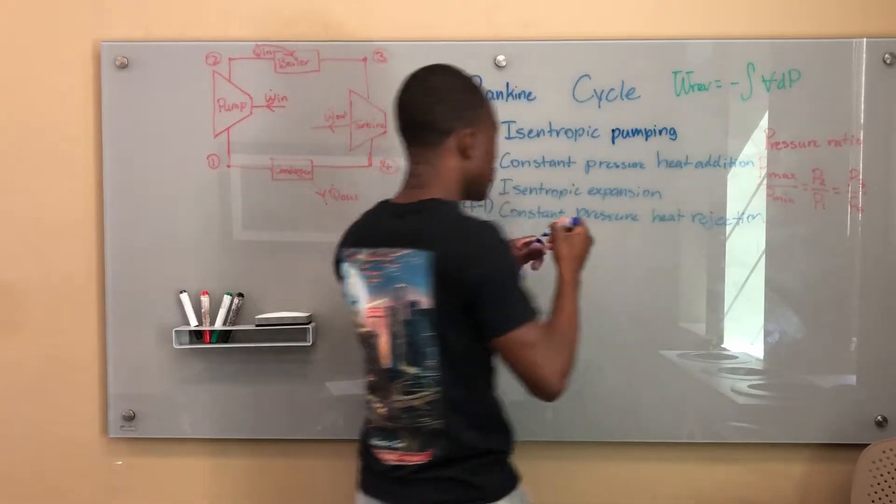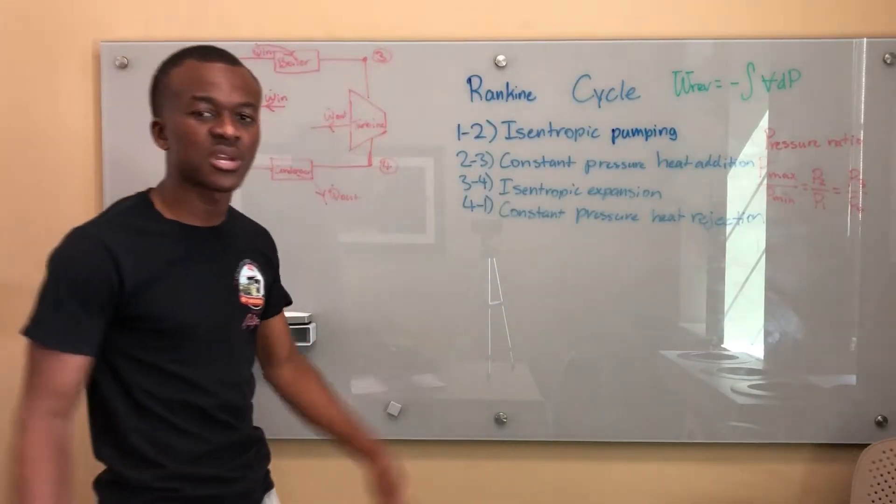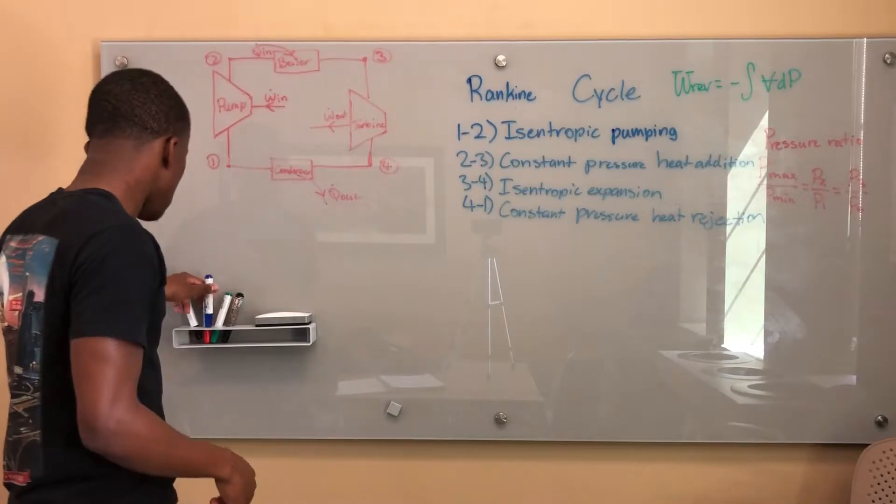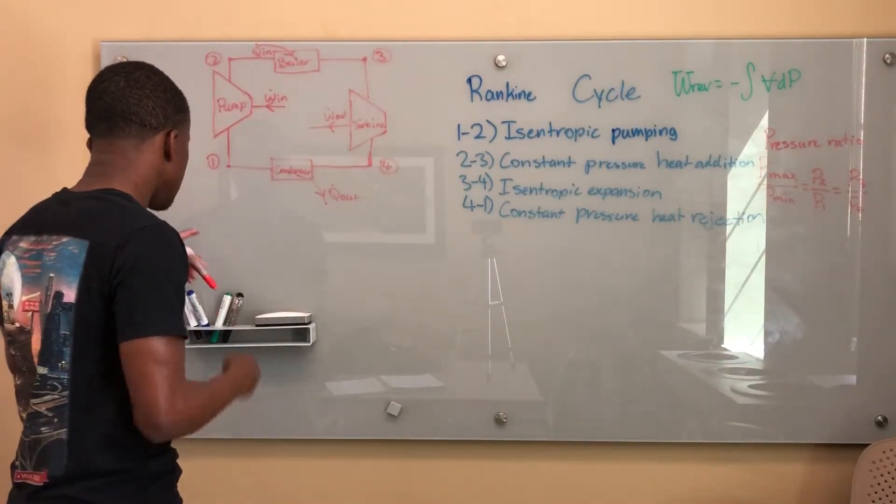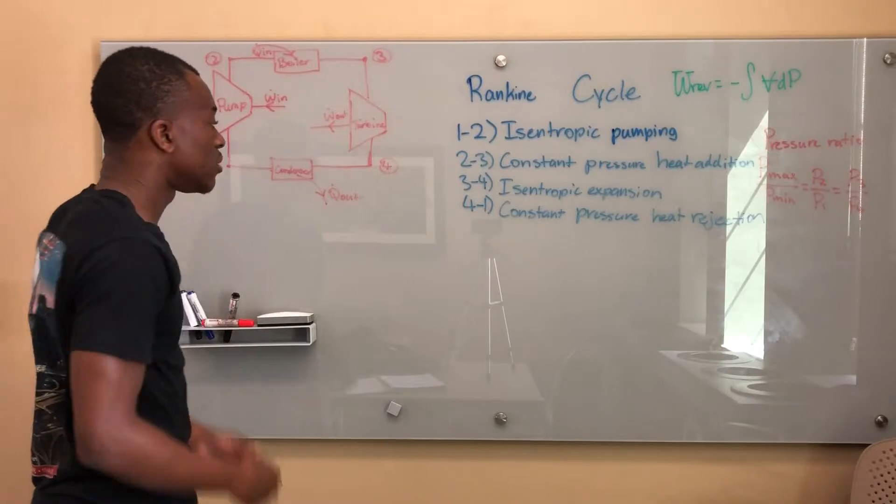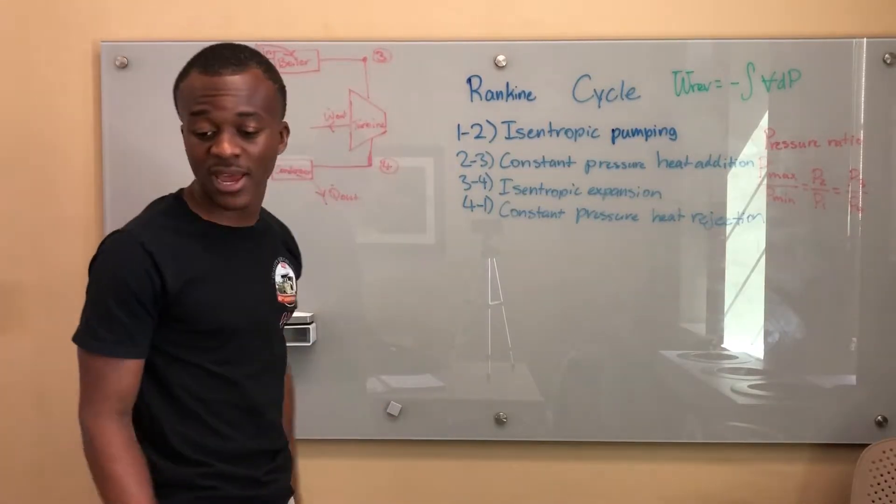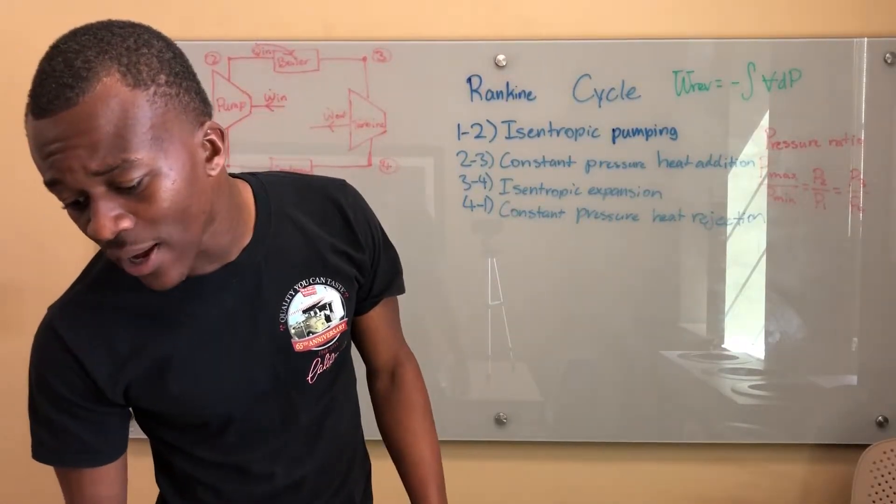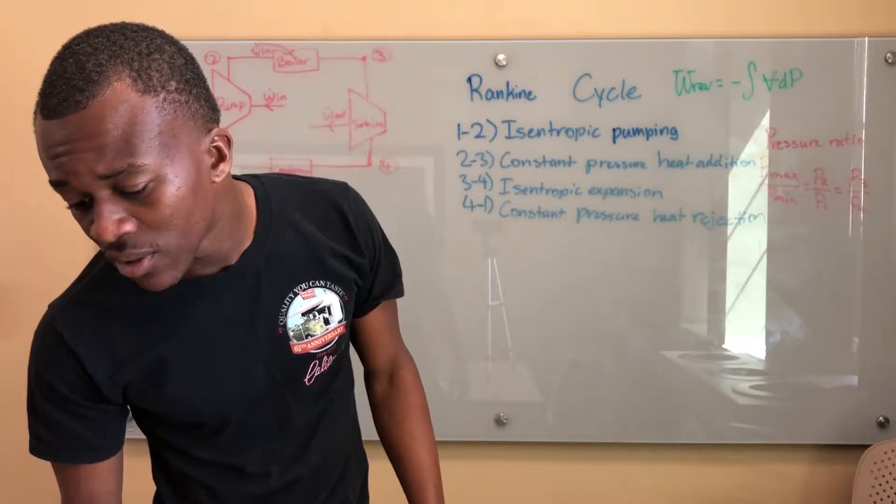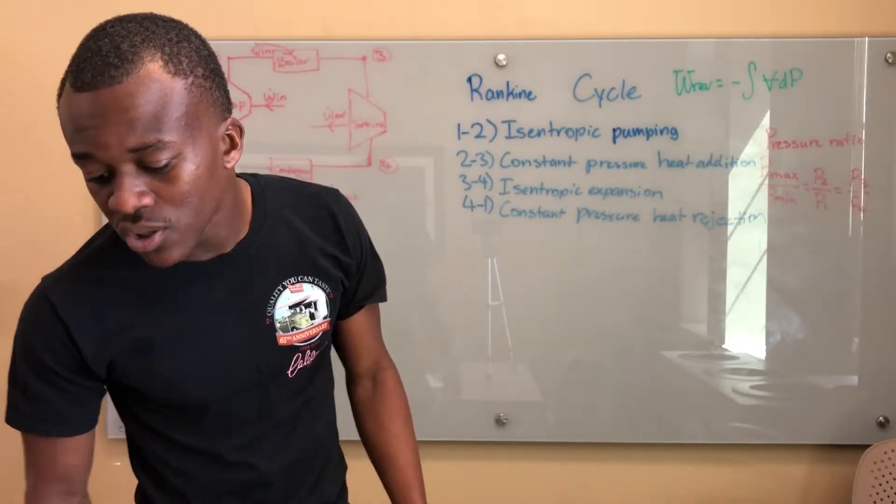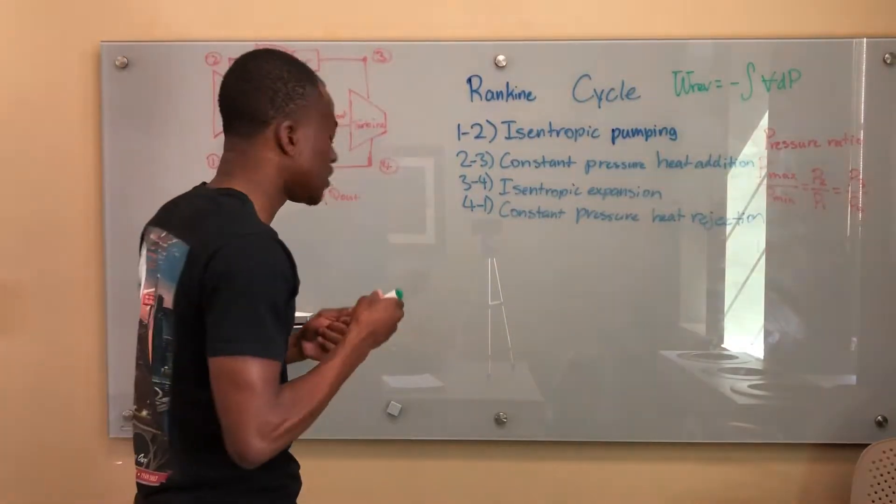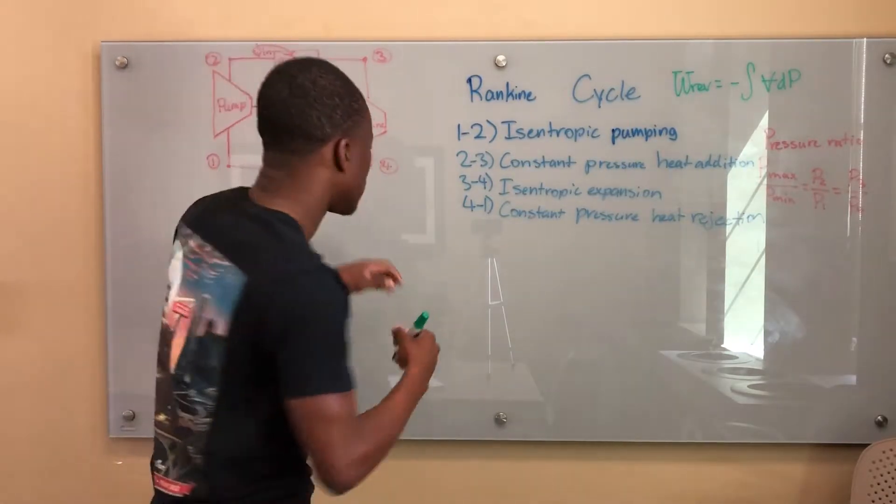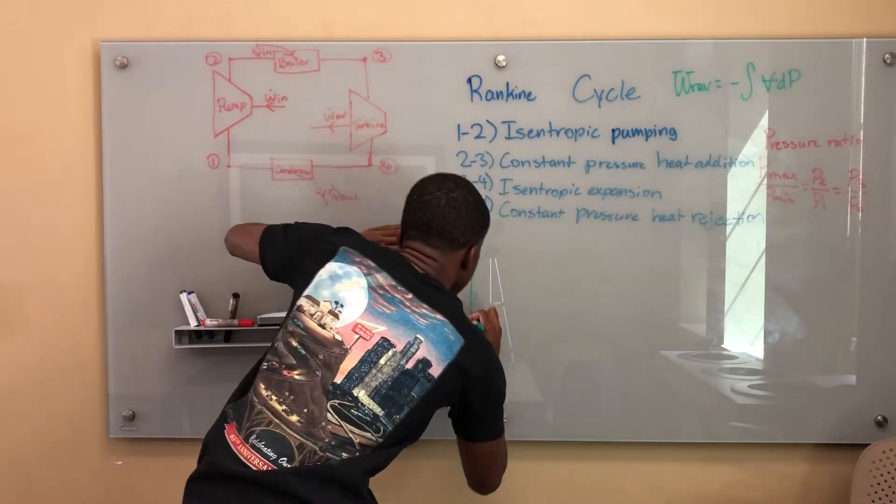And I'm pretty sure if you call it isentropic compression, the teachers probably wouldn't have any problem with it. So what do we have with the Rankine cycle? These same processes we have here, we also have a TS diagram. So let me show you how to draw the TS diagram.